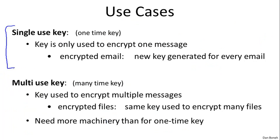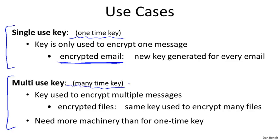The first is when every key is only used to encrypt a single message. We call these one-time keys. For example, when you encrypt email messages, it's very common that every single email is encrypted using a different symmetric key. Because the key is used to only encrypt one message, there are actually fairly efficient and simple ways of encrypting messages using these one-time keys, and we'll discuss those in the next module. There are many cases where keys need to be used to encrypt multiple messages. We call these many-time keys. For example, when you encrypt files in a file system, the same key is used to encrypt many, many different files. If the key is going to be used to encrypt multiple messages, we need a little bit more machinery to make sure that the encryption system is secure. After we talk about one-time keys, we'll move over and talk about encryption modes that are specifically designed for many-time keys.